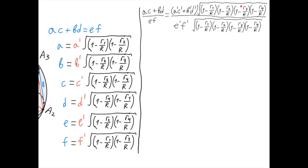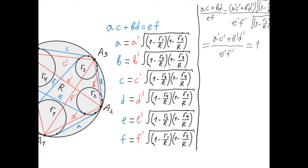We can factor the square-rooted expression out front, leaving (A'C' plus B'D') in the parentheses. EF equals E' times F' times the same square root of (1 minus R1 over R)(1 minus R2 over R)(1 minus R3 over R)(1 minus R4 over R). So we get the expression (A'C' plus B'D') over (E'F'). The two square-rooted expressions in the numerator and denominator are equal, so we can cancel them, leaving A'C' plus B'D' over E'F'.